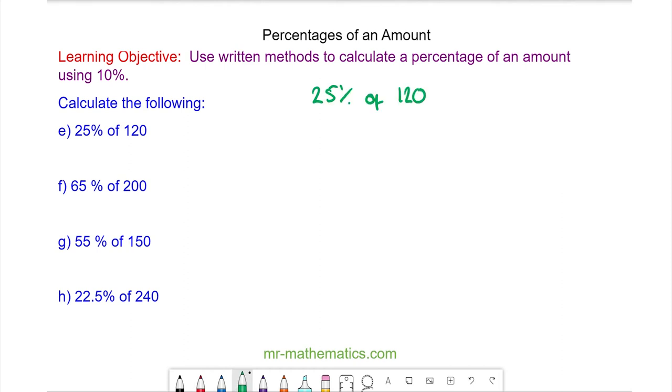For question e we can work out 10% as 12. And now we can work out 20% which is double the 10%, so 24. And we can add on to this 5% which is half of 10. So 5% is 6. And we can add these two together to get 25% is equal to 30.